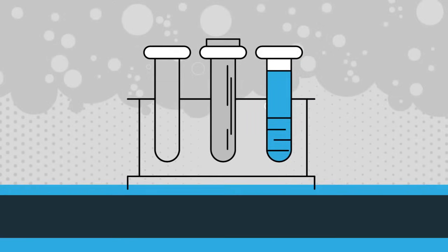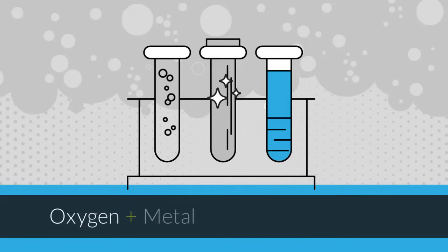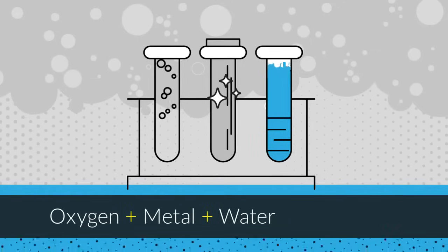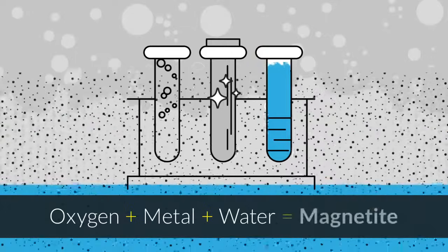The dissolved gases found naturally in water can impact your system in other ways. When the oxygen, metal, and water meet, a natural chemical reaction known as corrosion takes place, which results in this black sludge known as magnetite.